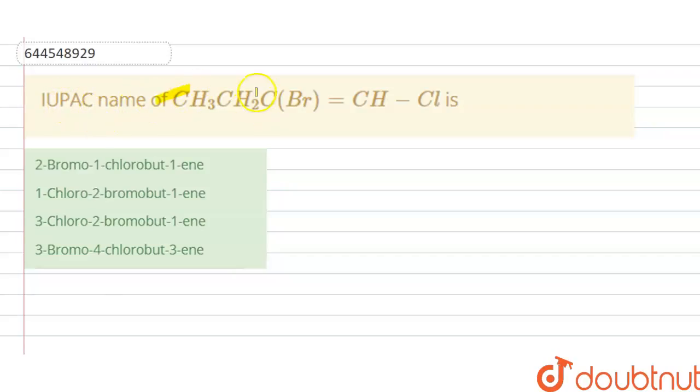IUPAC name of CH3-CH2-C(Br)=CH-Cl is... ABCD options are given here, so we have to choose the correct option.